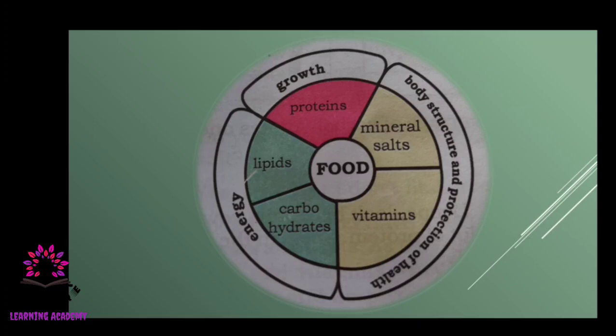Proteins help us in growth — they are body building nutrients. Minerals and vitamins give body structure and protective health — they are protective nutrients. Lipids, also called fats, and carbohydrates are energy giving nutrients.